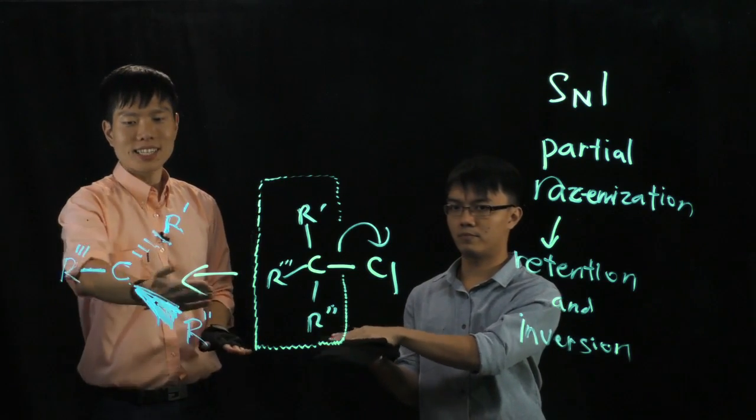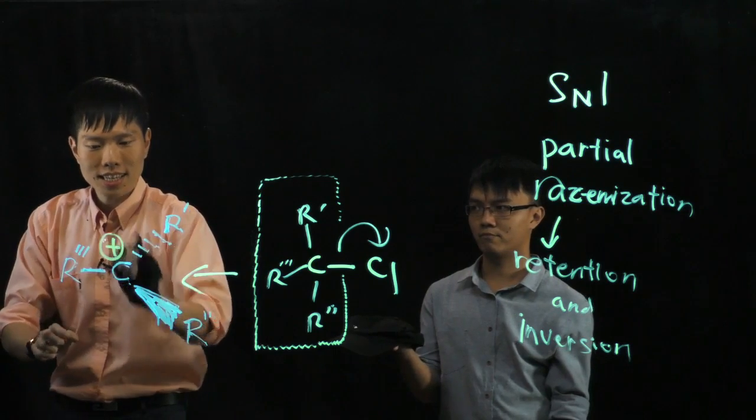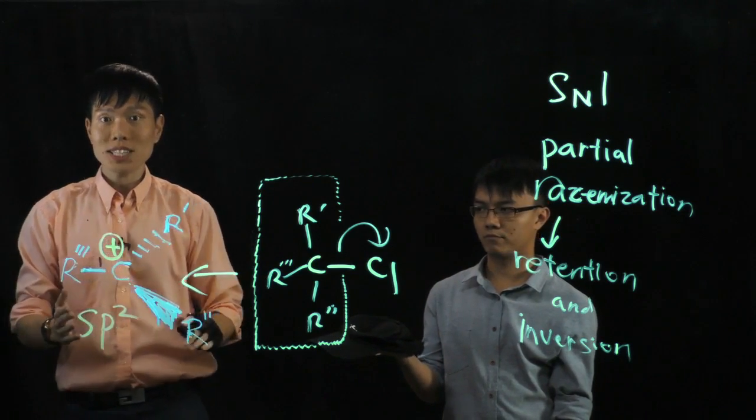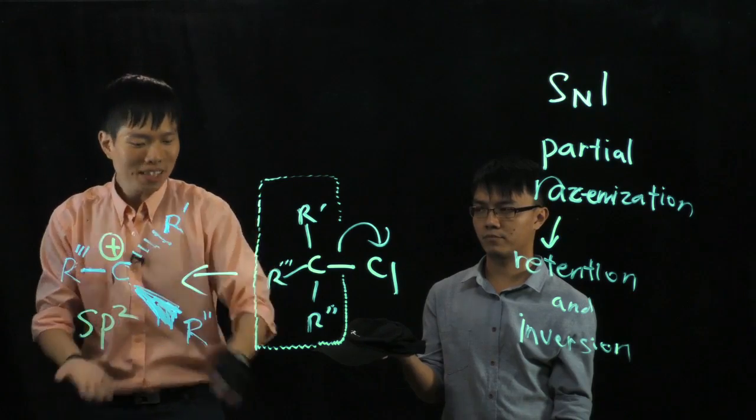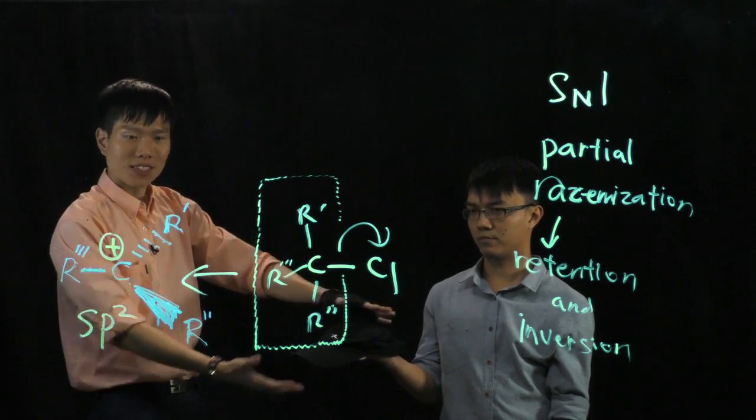And then we know that the carbocation that's being formed here is SP2 hybridized, which means it's flat, it's trigonal planar, and that's why this fragment now becomes flat. Do you see? It's flat.